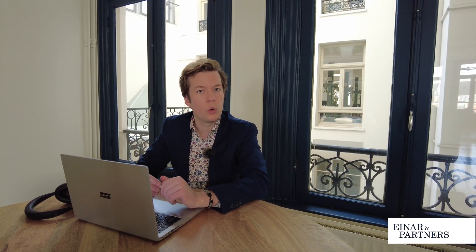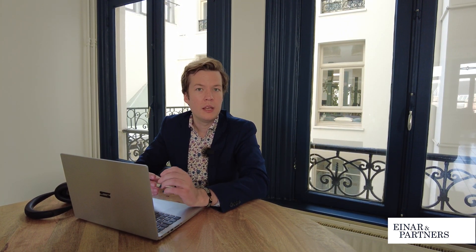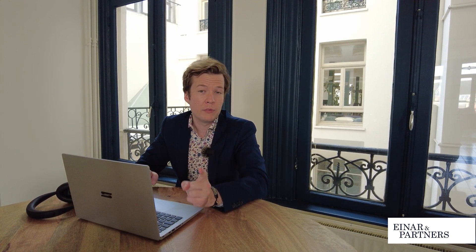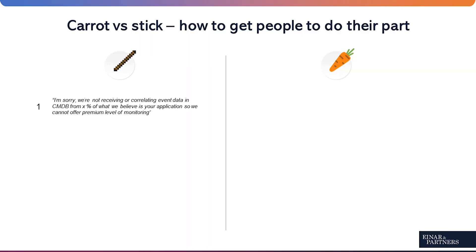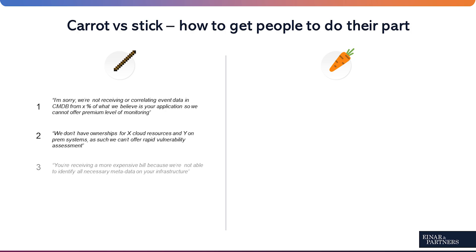Having other people maintain data quality is perhaps the most difficult part. We have to work with both the carrot and the stick. On the stick side, some examples include: we're not receiving or correlating event data in the CMDB from your application, so we cannot offer you a premium level of monitoring. Or: we don't have ownership records for your resources, so we can't offer you a vulnerability assessment. Or perhaps they receive a more expensive bill because we lack critical metadata on their infrastructure.